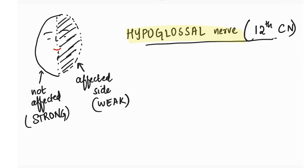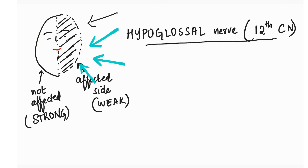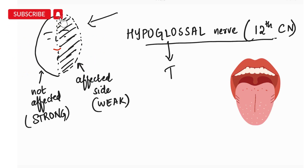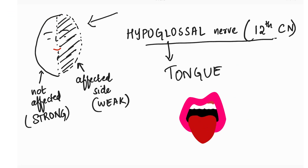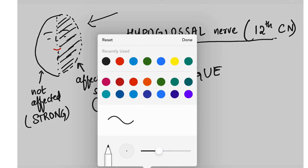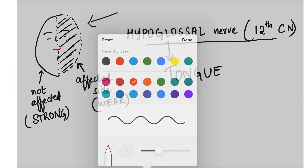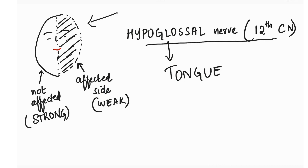First, let's learn about the hypoglossal nerve. I've just drawn a face here and one side is affected, which means that side is weak and the other side is not affected. The hypoglossal nerve is about the tongue, so we need to know: when the person sticks out their tongue, will it go to the right or to the left?